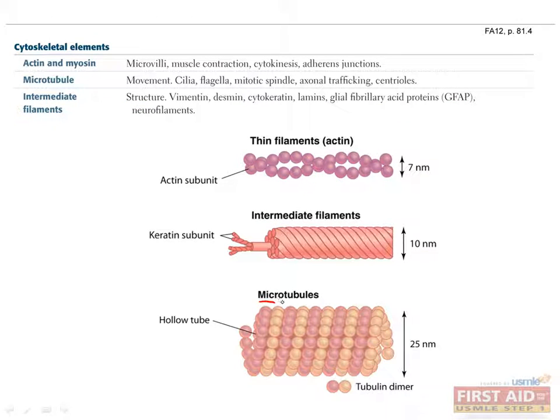We already talked about microtubules, but to recap, they are the largest part of the cytoskeleton with a diameter of about 25 nm and are generally involved in movement of things inside cells or of the cells themselves. They are present in cilia, flagella, the mitotic spindle, axonal trafficking, and centrioles.